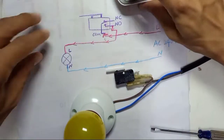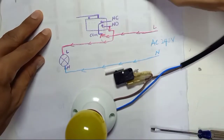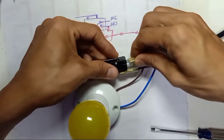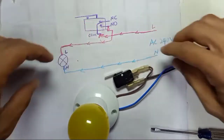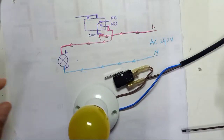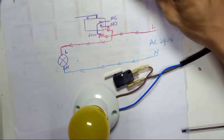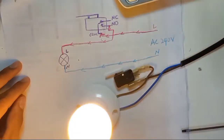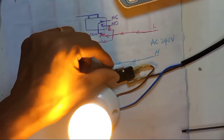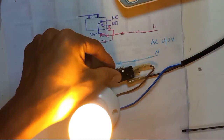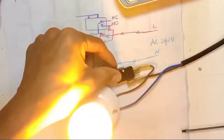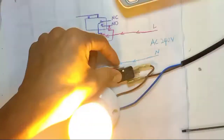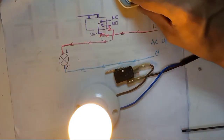I turn off the power and switch from normally open to normally closed. When you use normally closed the switch behavior is reversed — once you turn on the power source the light will turn on, but if you press the micro switch button the light will turn off. This is the difference between normally closed and normally open.